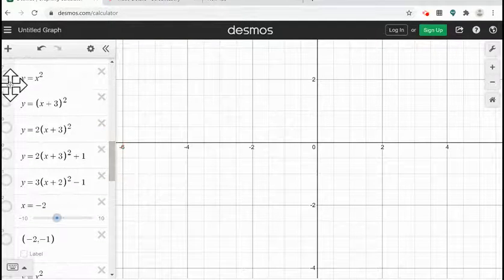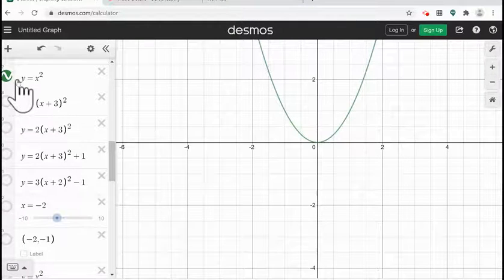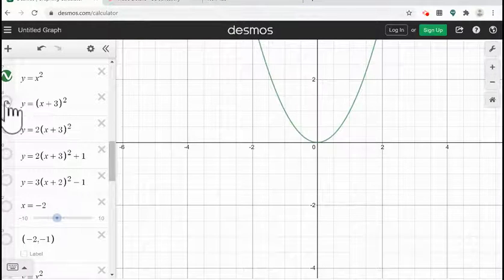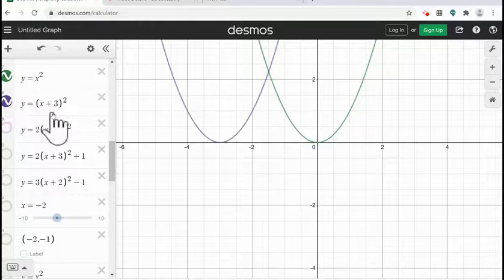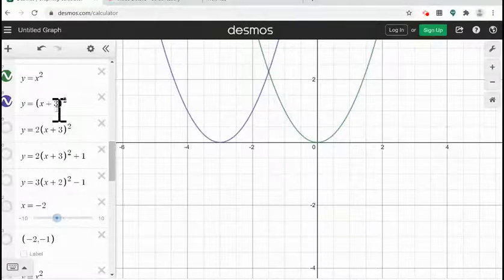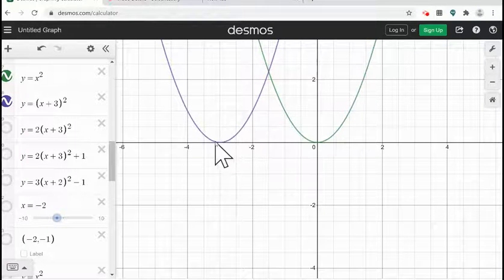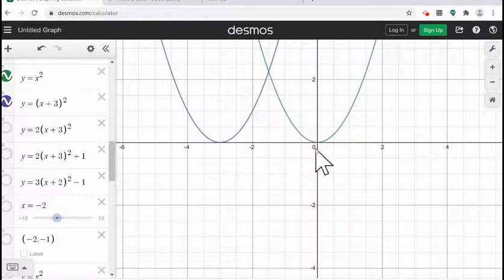So always we start with the original function which is y equals x square. And similarly in our first steps we are using x plus 3. So this adding 3 inside of the function gives us horizontal shift to the left by 3 units. So this is moving 3 units from the original function.